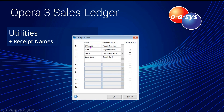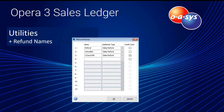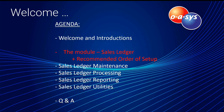Refund names handle how a sales refund is processed through the cash book. That covers the recommended order of setup, and we'll see those areas in a moment as we go through before moving to the maintenance area.